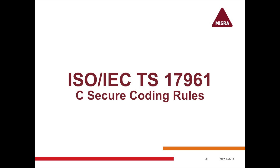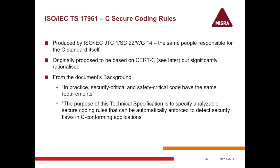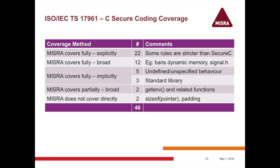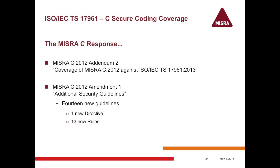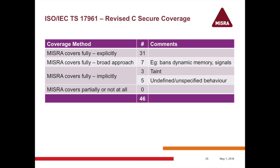ISO 17961 has 46 guidelines. We found that 22 of them our rules absolutely cover, 12 we broadly cover, down to two we didn't cover. When we looked at those, one made us ask 'how did that get through?' and the other was clearly something we ought to address. So we decided to create an amendment to the MISRA guidelines: one new directive and 13 new rules. Once these are in place, we fully cover 31 and broadly cover 7. Some of our broad coverage comes from rules that say don't use this whole block of functionality.